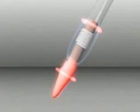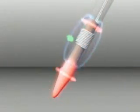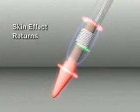During soldering, as the tip cools, the alloy falls below its Curie point temperature and regains its magnetic properties. The skin effect immediately returns, increasing the resistance, and heating begins again, repeating the cycle.